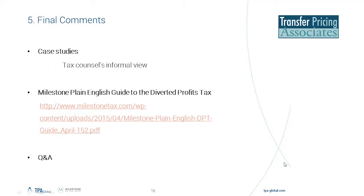That brings us to the last slide, which gives some context for the case studies. There are three case studies currently being looked at in the slides that you can go away and have a look at, to give more color to the things we've been discussing today. It's worth noting that one tax barrister at the conference on Tuesday was of the view that the first two case studies — the fast-moving consumer goods group and the e-commerce group — would not have an avoided PE based on HMRC guidance.